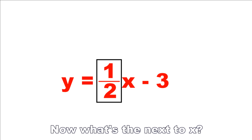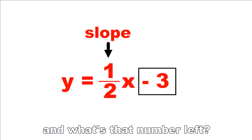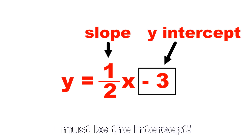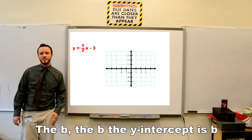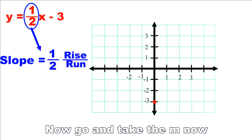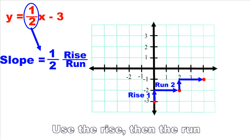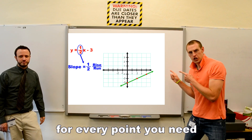Now what's up next to x? The slope is next to x. And what's that number left? Must be the intercept — the b, the b. The y-intercept is b. Start on the y-axis, begin with the b. Now go and take the m — the slope is next to it. Use the rise and the run for every point you need.